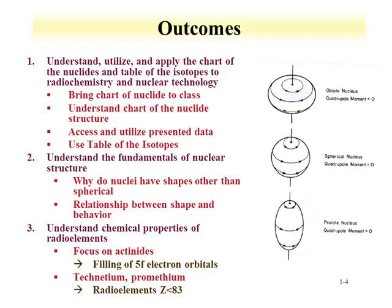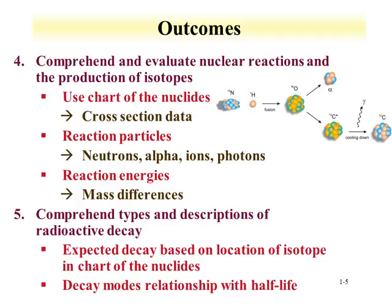There's also a part of the course discussing nuclear structure. The nucleus isn't just a dot — nuclei have shapes, including spherical, oblate, and prolate forms, and nuclear shape influences nuclear properties. We'll also explore the chemistry of radioelements, focusing on the actinides and their 5F electrons. On the periodic table, the lanthanides fill the 4F electrons and the actinides fill the 5F electrons.